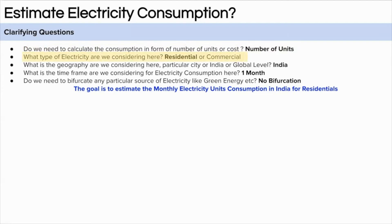The second question we can ask is about the consumption — are we considering units consumed by commercial or residential entities? Let's assume we are thinking about residential entities. The third question is about geography: a city, entire India, or global level? Let's assume we are thinking about electricity consumption in India. The fourth question is about timeframe — what timeframe are we considering?